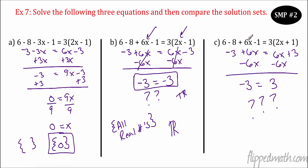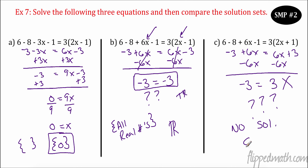Over here, we have a distribution: 3 times 2x is 6x, 3 times 1 is 3. I subtract it out and now I have negative 3 equals 3. Can negative 3 equal 3? No, negative 3 cannot equal 3. This is false. There will never be a number that works here — there will be no solution to this one. We write that as the empty set.